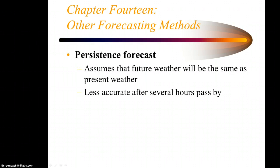A typical forecast might be something called a persistence forecast, which is great to a very small extent only. It assumes that future weather will be the same as present weather. This is less accurate after several hours pass by. On a particular summer day in Fresno where it's clear, like the day was yesterday and the day is going to be tomorrow, in the summertime that may not be such a bad thing, but a persistence forecast is one method of forecasting.